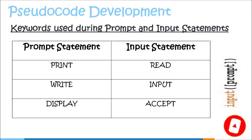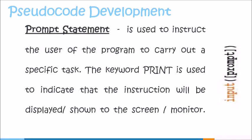We have different keywords that are used during the prompt and input stages of pseudocode development. For our prompt statements, we can use the keyword print, write, or display. And for input statements, we can use the keyword read, input, or accept. Throughout this video, you will see where the keywords print and read would be used in our prompt and input statements.